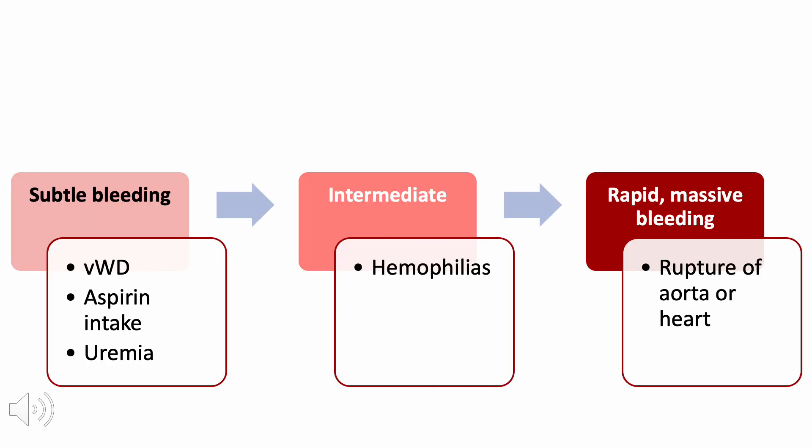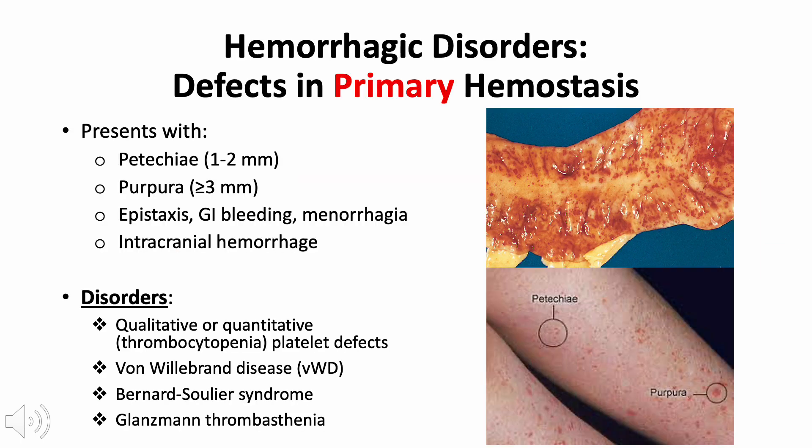Let's first talk about hemorrhagic disorders. Hemorrhagic disorders can be due to primary or secondary defects in vessel walls, platelets, or coagulation factors. The presentation varies widely - from subtle bleeding as in von Willebrand disease or with aspirin intake or uremia, to intermediate bleeding including hemophilias, to very massive rapid bleeding due to rupture of the aorta or heart.